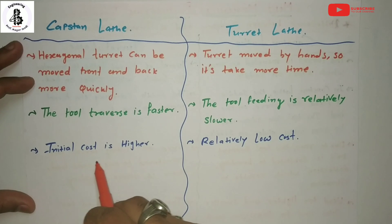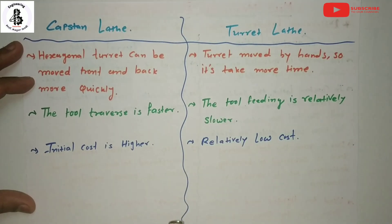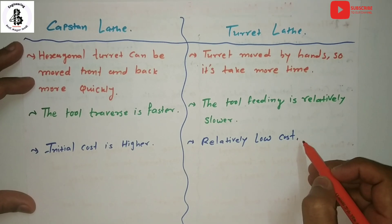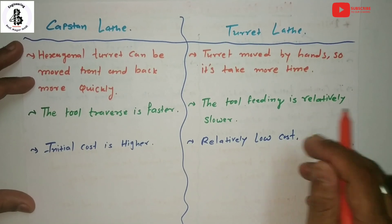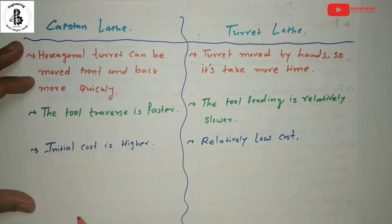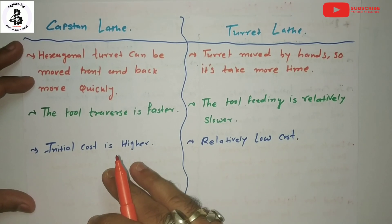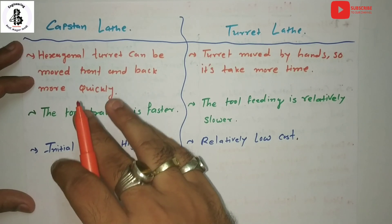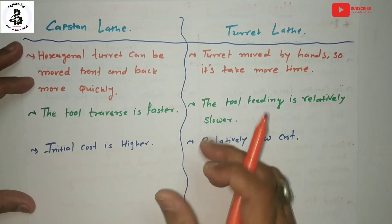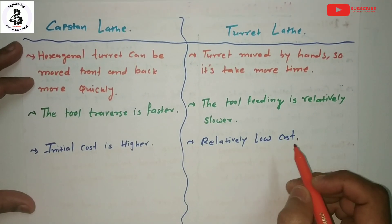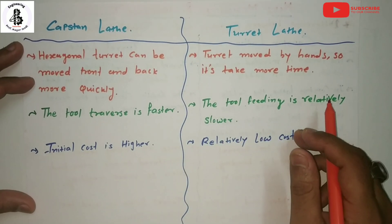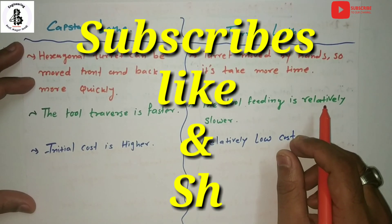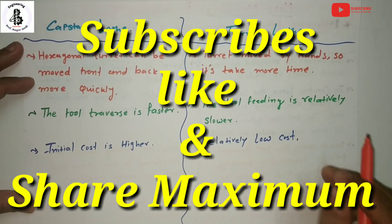Finally, the capstan lathe has a higher initial cost, while the turret lathe has a relatively lower cost compared to the capstan lathe. From this comparison, I suggest that for higher accuracy with minimum time, the capstan lathe is preferred. I hope you understand the basic differences between capstan and turret lathe. If you like this, please subscribe and share — thank you very much.